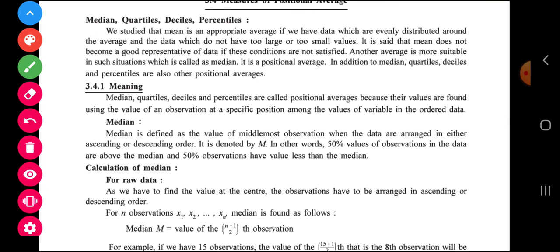Median is nothing but median is defined as the value of middlemost observation when the data are arranged in either ascending or descending order. Median is denoted by M that you all know very well. In other words, 50% value of observations in the data are above the median and 50% observations have less than the median. If we arrange the data in ascending order like this,